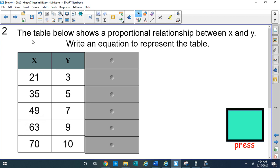All right, number two, the table below shows a proportional relationship between X and Y. Write an equation to represent the table. Well, here's our numbers. Here's our column for X, the independent variable. And Y is dependent upon that. There's our Y column. But we have a third column here.